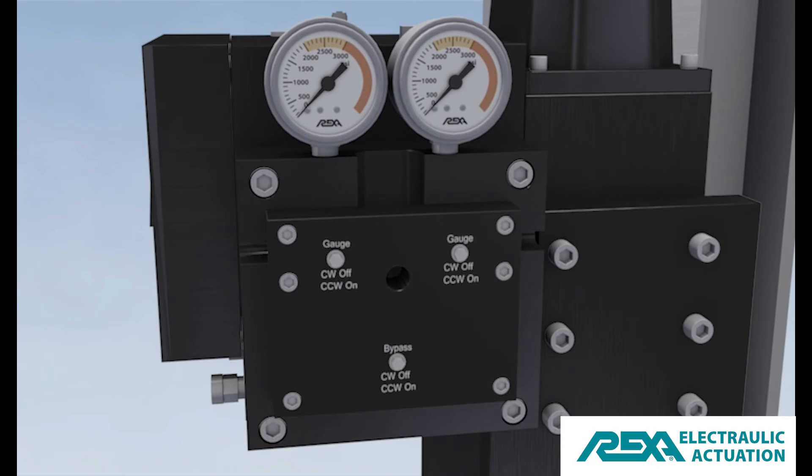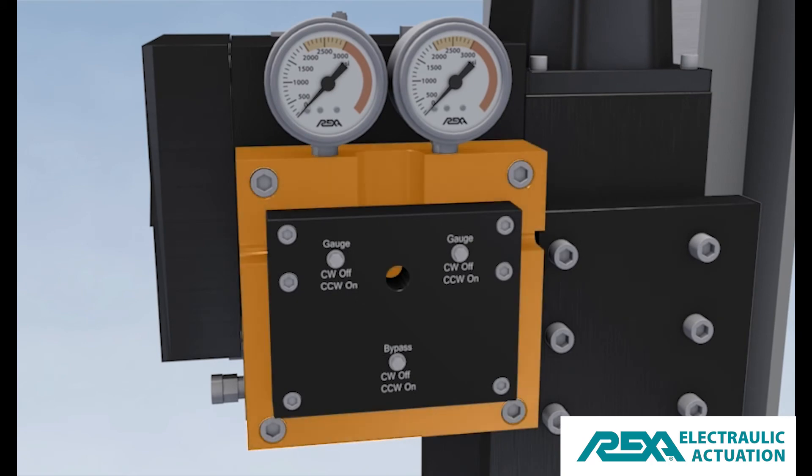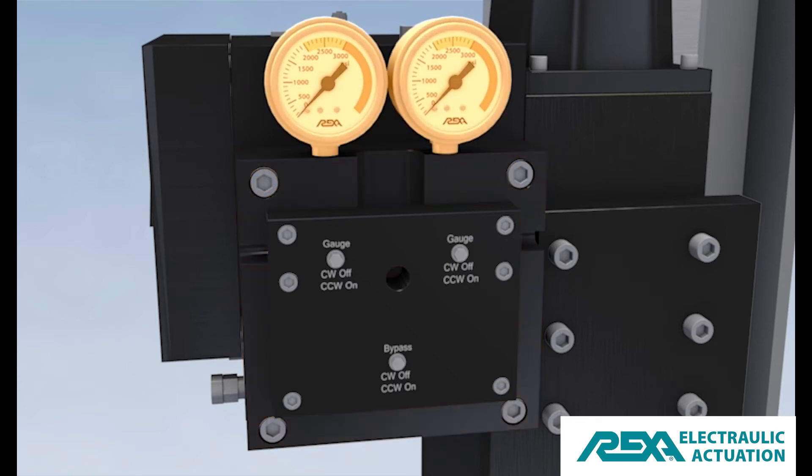The powertrain components are fastened to a manifold. The manifold fastens to the power module block and contains two pressure gauges that monitor the extend and retract pressures. The gauges are used for troubleshooting and observation purposes and are isolated during normal operation to lengthen their life.